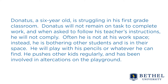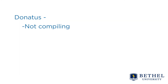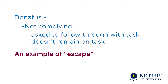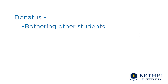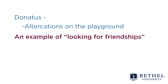The next question we ask is: what is maintaining the behavior? What are the consequences the student is receiving? Donatus is not complying; he's asked to follow through with tasks several times. So is it that he's really impulsive? Is there an attention issue getting in the way? Is he struggling to do the task and becoming frustrated? This would probably be an example of escape — escape from the task because it's too challenging, too hard, or boring. I've had bright students who escaped because they were bored. Also, he's bothering other students, which suggests he's probably looking for attention.